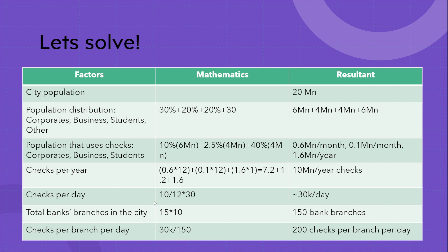Now let us assume there are 50 top banks in the city, and on average they each have 10 branches spread across the city. That gives us 500 bank branches all over the city. To find out how many checks every branch processes on average, we divide 30,000 by 500 branches, which gives us 200. So in summary, a bank branch processes 200 checks per day.